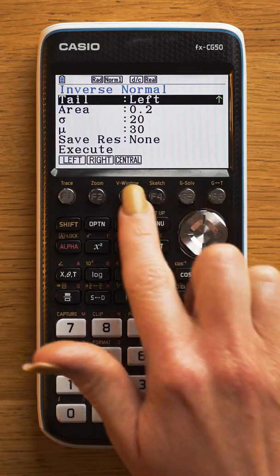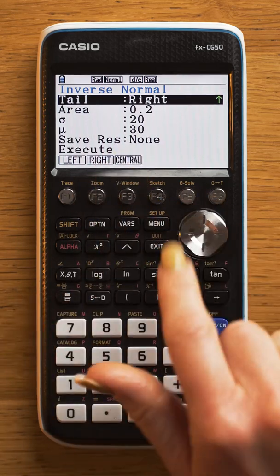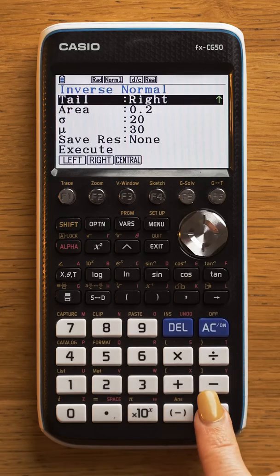You can also change it here, and that will give you the top 20% versus the bottom 20%.